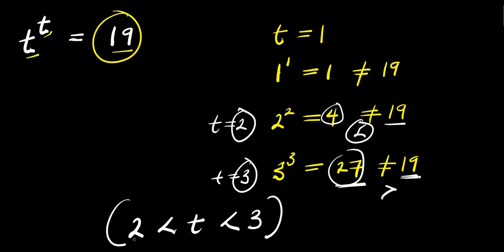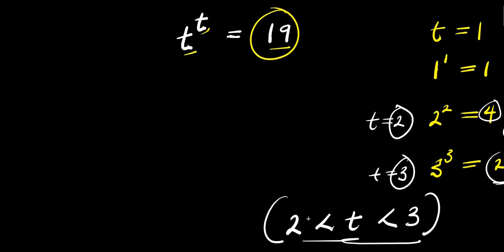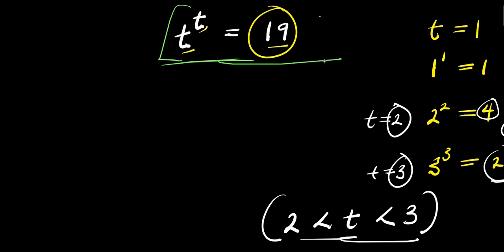So this actually gives us a mental picture of where the value of t lies. We need to solve this properly — we cannot just be testing values like 2.1. That's not the way of solving a problem, so we are going to solve this now. Let's make use of natural log.